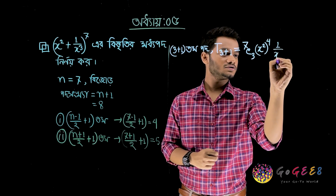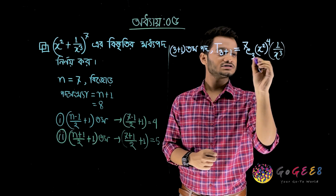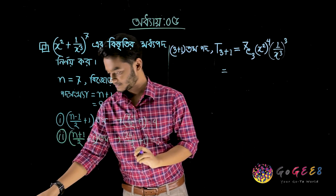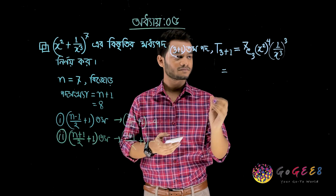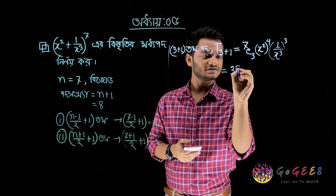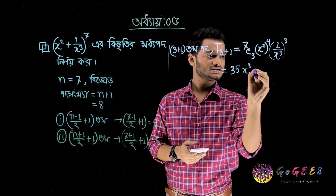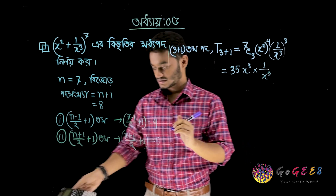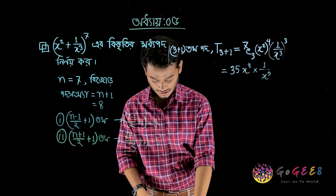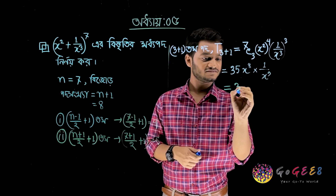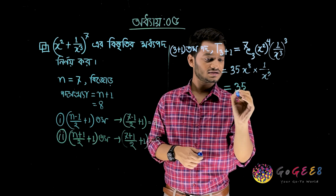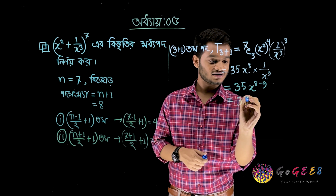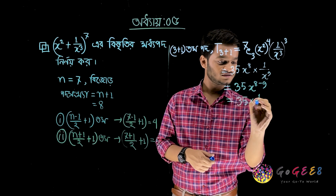1 by X cubed. The power is H. And the anti-camera is 7. 35 X to the power 8 into X to the power 15. We can see X to the power 8 minus 9, ultimately 35 X to the power negative 1.